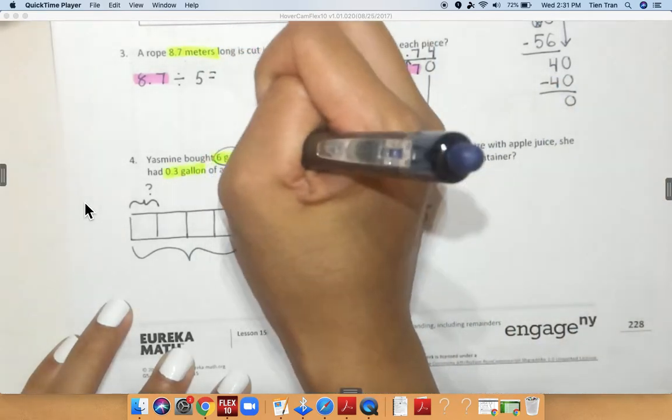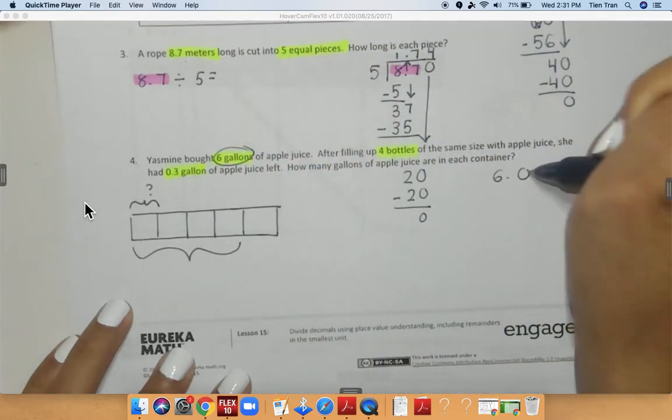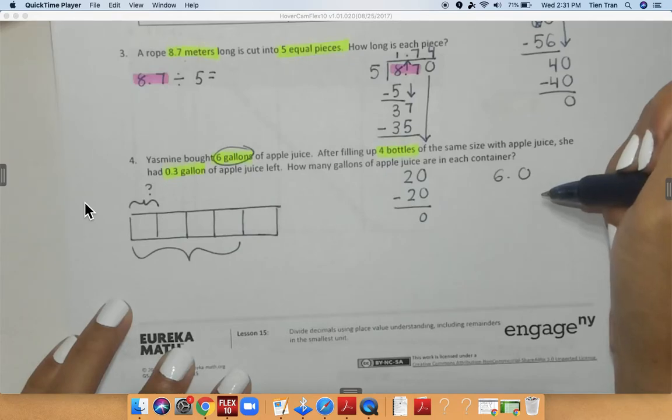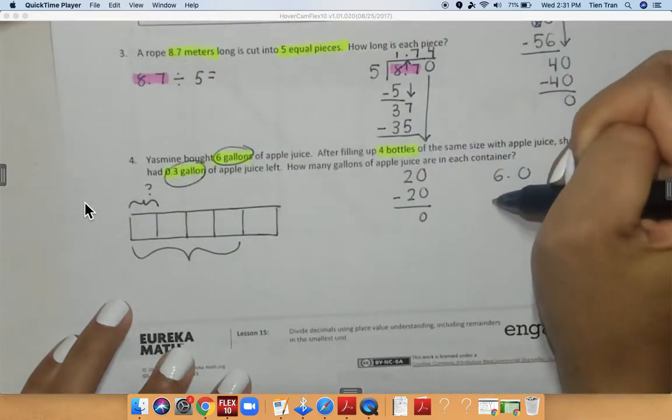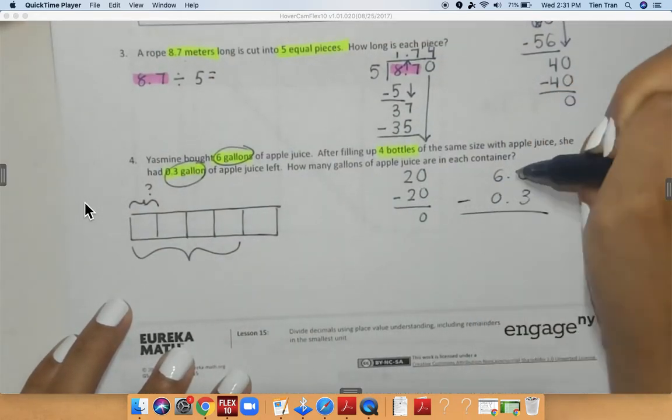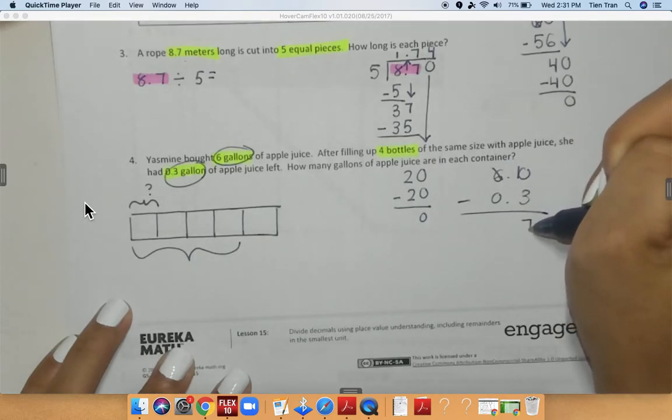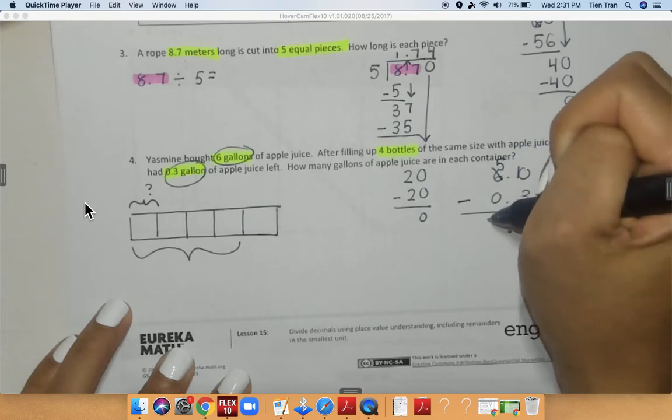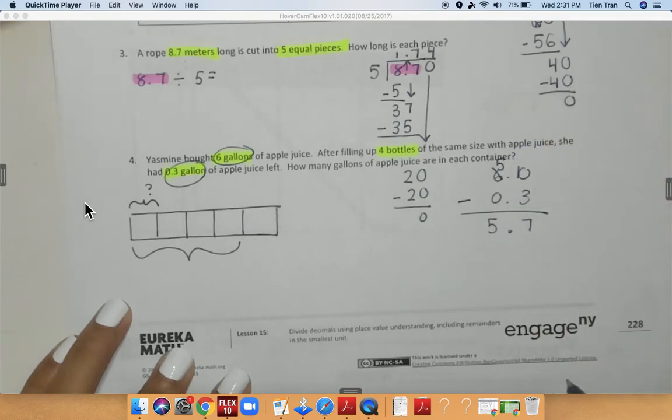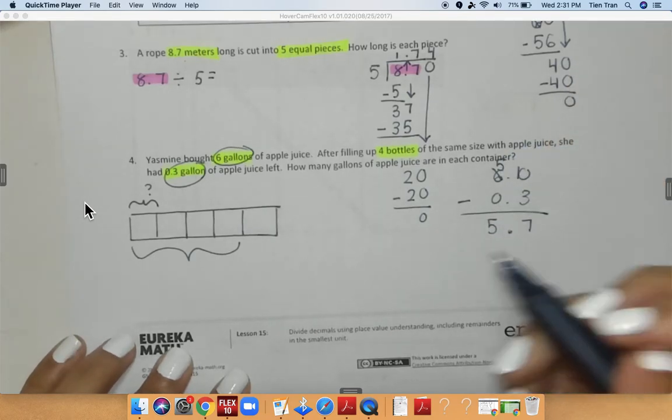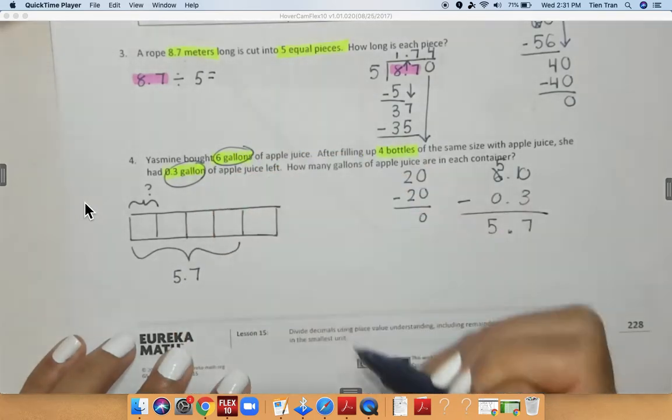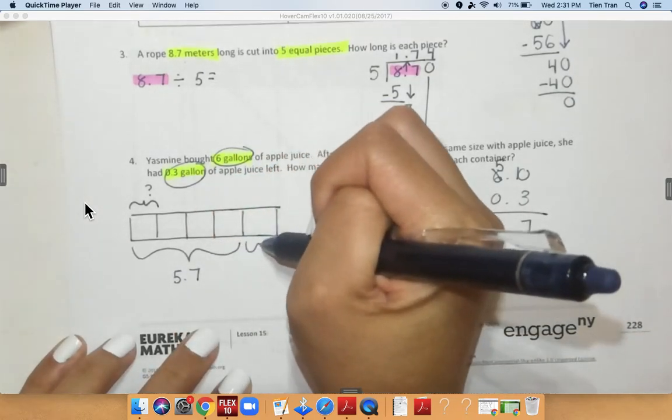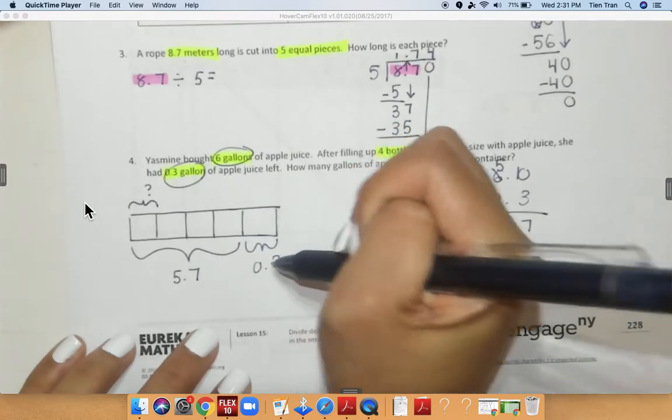So I'm going to subtract six gallons. So six gallons, and I'm going to subtract that by 0.3 gallons of apple juice. 10 minus 3 is equal to 7. Bring down my decimal. 6 changes to a 5. 5 minus 0 is equal to 5. So I get 5.7. So I know that this is equal to 5.7. And over here, what I have left is 0.3.